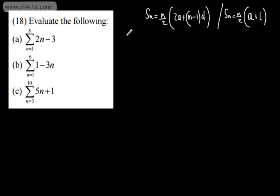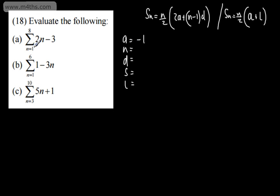For question A, I'm going to collect the information as before: A the first term, N the number of terms, D the difference, S the sum, and L the last term. We're summing from n equals 1 to n equals 8. Substituting n equals 1: 2 times 1 minus 3 gives a first term of negative 1. The number of terms from 1 to 8 is 8. The common difference is the coefficient of n, which is positive 2.